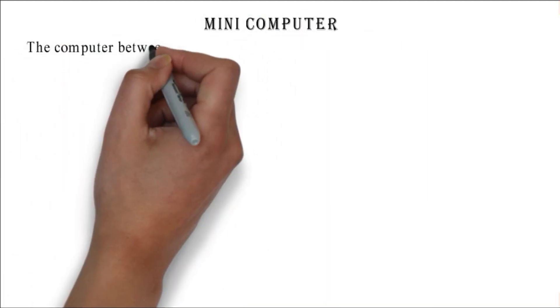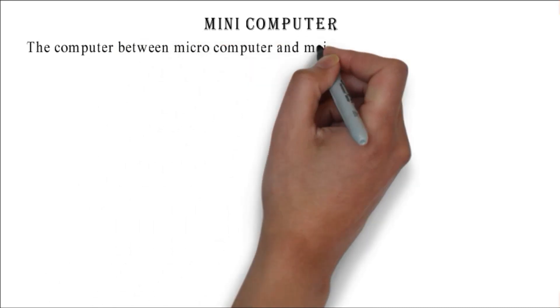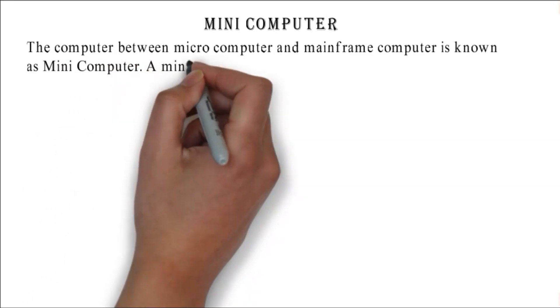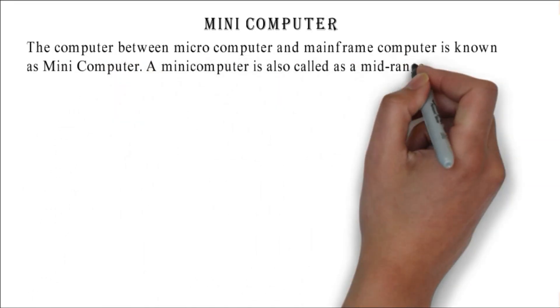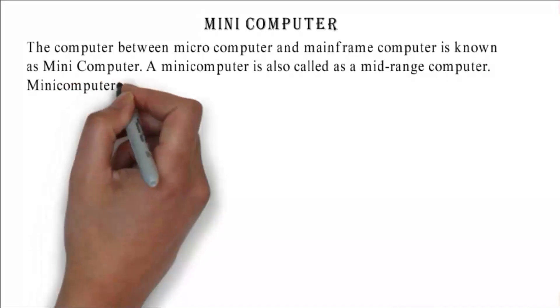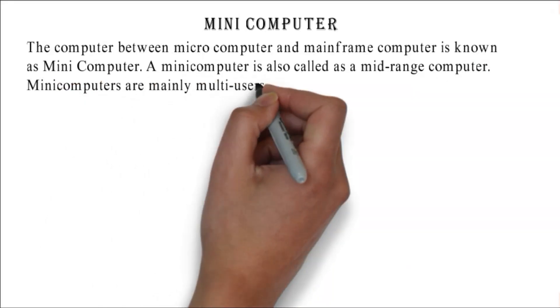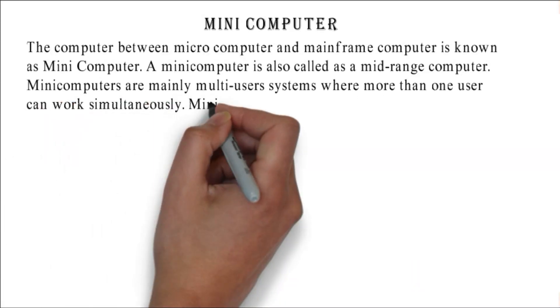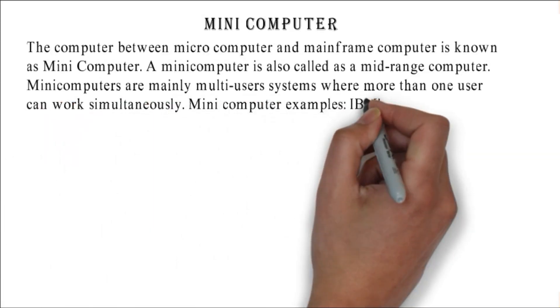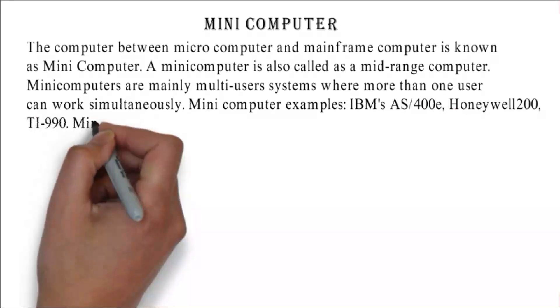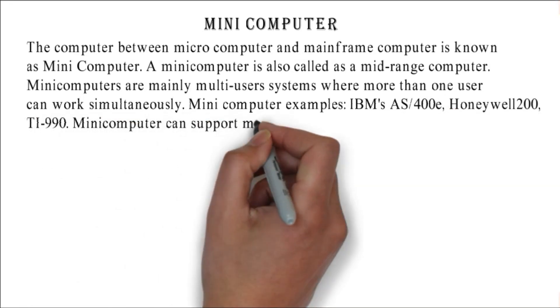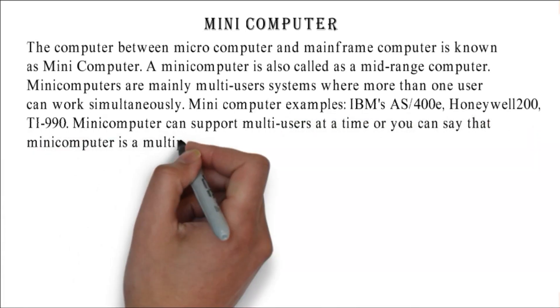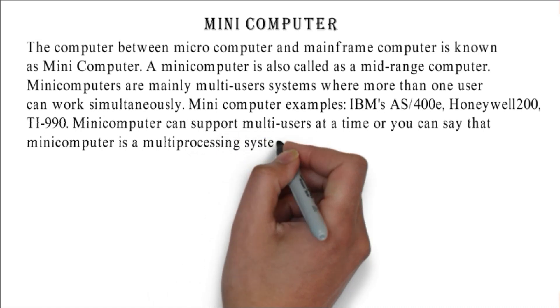Mini computer: the computer between microcomputer and mainframe computer is known as mini computer. A mini computer is also called a mid-range computer. Mini computers are mainly multi-user systems where more than one user can work simultaneously. Mini computer examples: IBM's AS/400E, Honeywell 200, TI 990. Mini computer can support multi-users at a time, or you can say that mini computer is a multi-processing system.